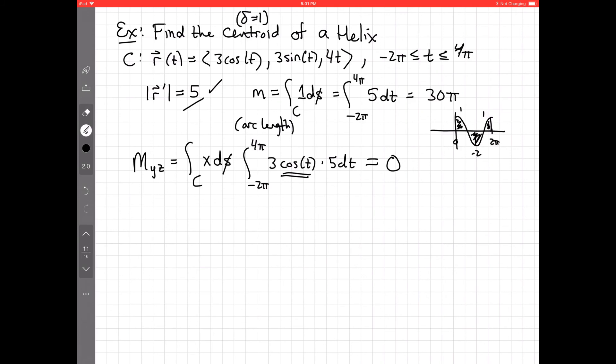Because we're going through a full period of cosine three times. We get 0 plus 0 plus 0. Likewise, if you go look at the moment about the xz plane, y ds, the exact same thing happens. Because if we look at y's component function, it's 3 sine. And the same thing happens. We go through three full periods of sine. And then, we get 0.